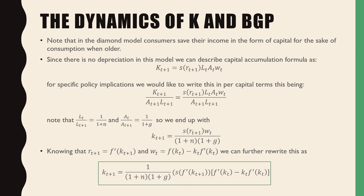Note that in the diamond model, consumers save their income in the form of capital for the sake of consumption when older. Since there is no depreciation in this model, we can describe the capital accumulation formula as KT+1 is equal to the savings rate as a function of the return on the market in T+1, times LT, AT, and wages per effective worker.